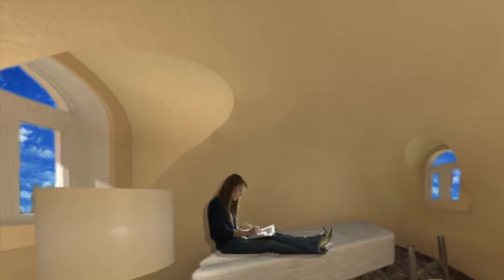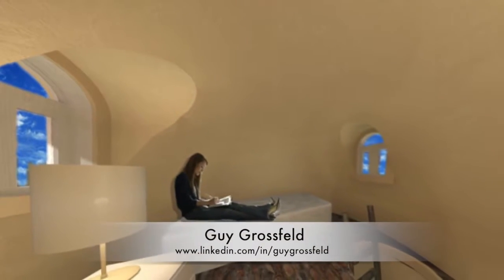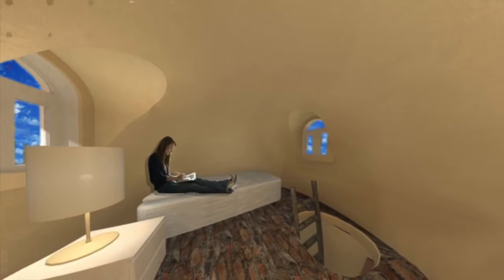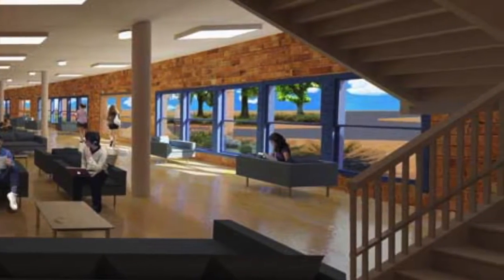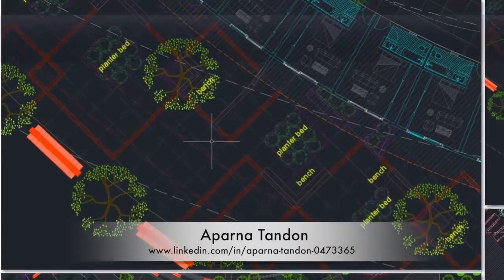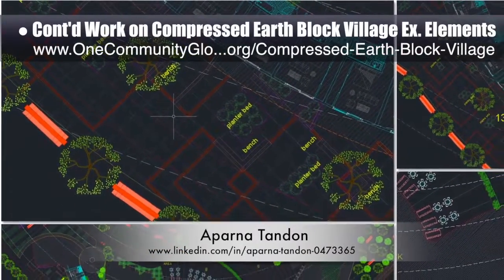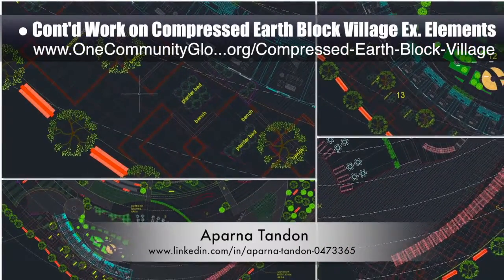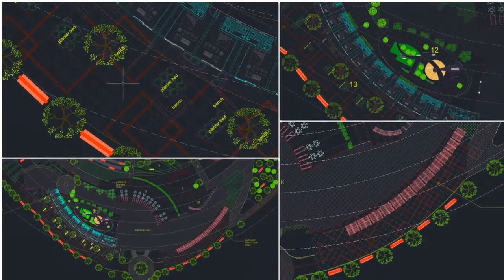Adding details to both Dean and Hamilton's previous work, Guy Grossfeld, graphic designer, created the final Cobb village west living space loft area render and a second generation compressed earth block village front area looking southeast render. Aparna Tandon, architect, continued her work on the compressed earth block village external elements. In her 18th week, she focused on integrating into the front of the west side similar layout and landscaping details as used in the front of the east side.